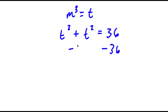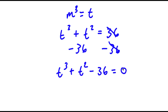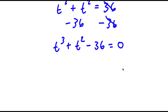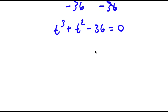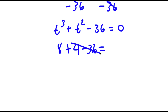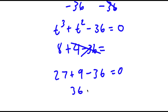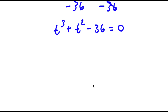If I subtract 36 on both sides, these two cancel out, and now I have t to the power of 3 plus t squared minus 36 is equal to 0. To solve this, I need to find one value of t first, so I'll start plugging in values. If I plug in 0, that would be negative 36. Plugging in 2: 2 cubed is 8, plus 2 squared is 4, minus 36 — that doesn't work. Plugging in 3: 27 plus 9 minus 36 equals 0, which works. So t equals 3.